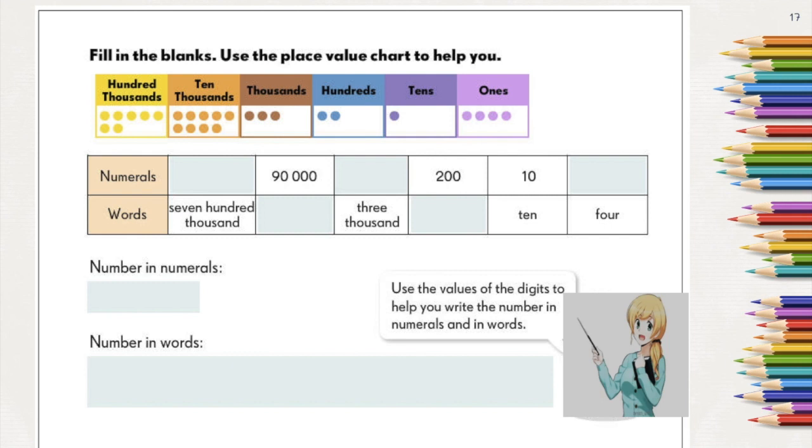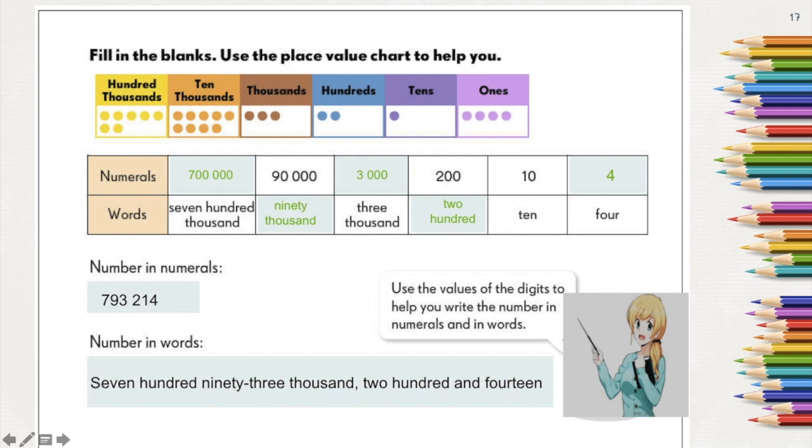Another example. Here we have four ones, and lastly we have 700,000, and the value would be like this. Let's write this number in standard form. It is read as 793,214.